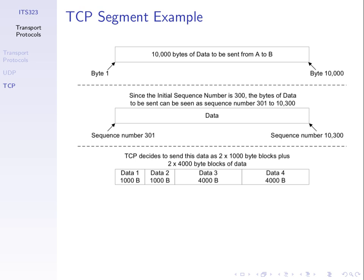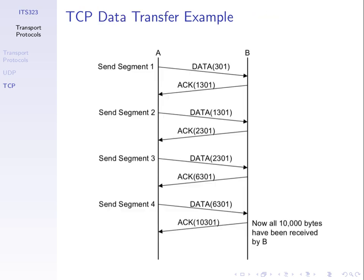TCP labels data with sequence numbers by bytes, not by segments. TCP may decide to send data in different sized chunks, so it performs some segmentation. If we have 10,000 bytes of data to send, TCP may send, for example, four segments of different sizes. The details of TCP algorithms determine how big those segment sizes will be. This was one final example of data with sequence numbers and the corresponding ACK numbers that came back, depending upon the size of the data in those TCP segments.